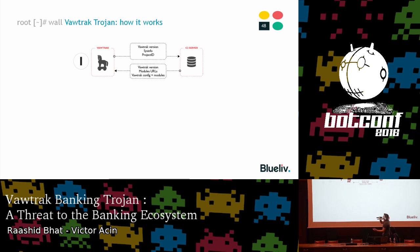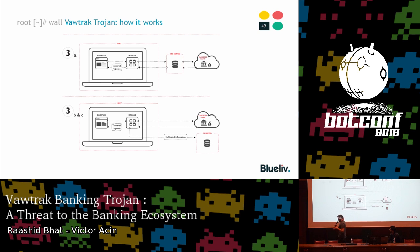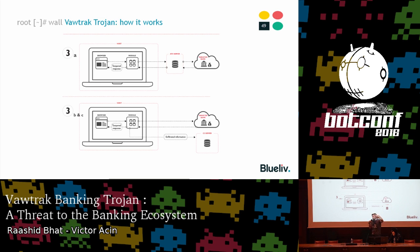When Vawtrak infects a machine, it communicates with the command and control server and sends all the information described. The C2 server responds with the Vawtrak version, modules, and configurations. Vawtrak then communicates with the support server to update itself and integrate new modules. From this point it can begin to operate. We detected Vawtrak using two different modes: the first involves the ATS performing a man-in-the-middle attack, and the second has the webinject module intercept, modify responses, or steal the information the Vawtrak group wants from that target.